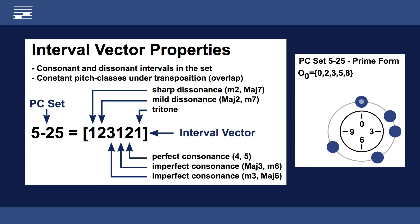The interval vector on the left lists the number of consonant and dissonant intervals. For example, looking at the fifth element we see that there are two perfect fourths in the set. Also, this set contains a maximum of three minor third intervals.